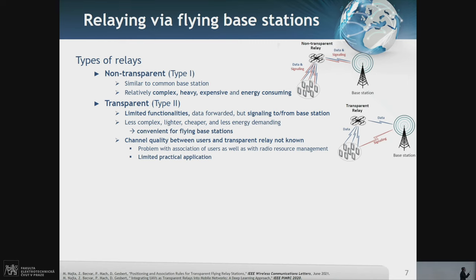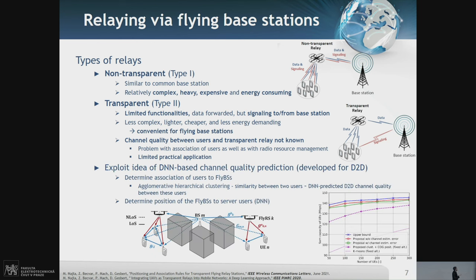Unfortunately, around 2008, it was discovered that no signaling and no control functionalities at transparent relay leads to problems with association of users because we're not able to measure channel quality. All information regarding channel quality comes from base station, so we know this channel but not that channel. This was one of the reasons why transparent relays were dropped from standardization process. But we can think about this relay and treat it as a device, then apply the solution we proposed for D2D channel quality prediction using DNN. We integrated it with algorithm for association of users to either ground or flying base stations and to determine position of drones. We showed we can significantly improve system capacity with respect to state-of-the-art works by dozens of percent.